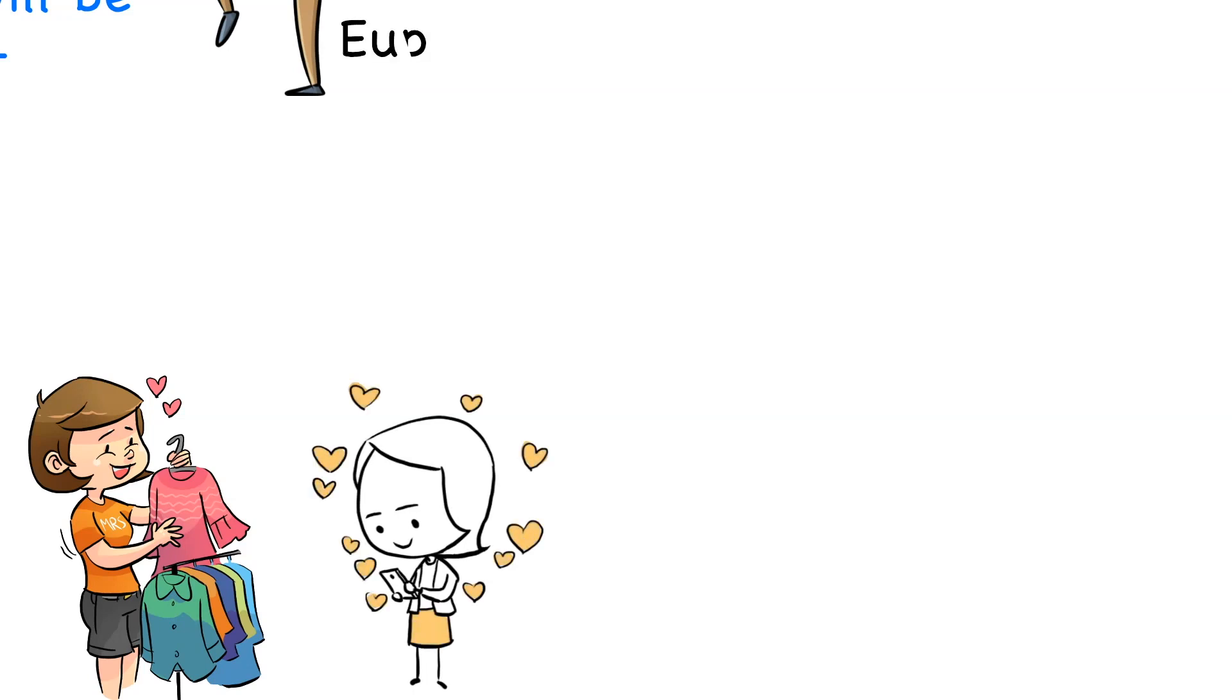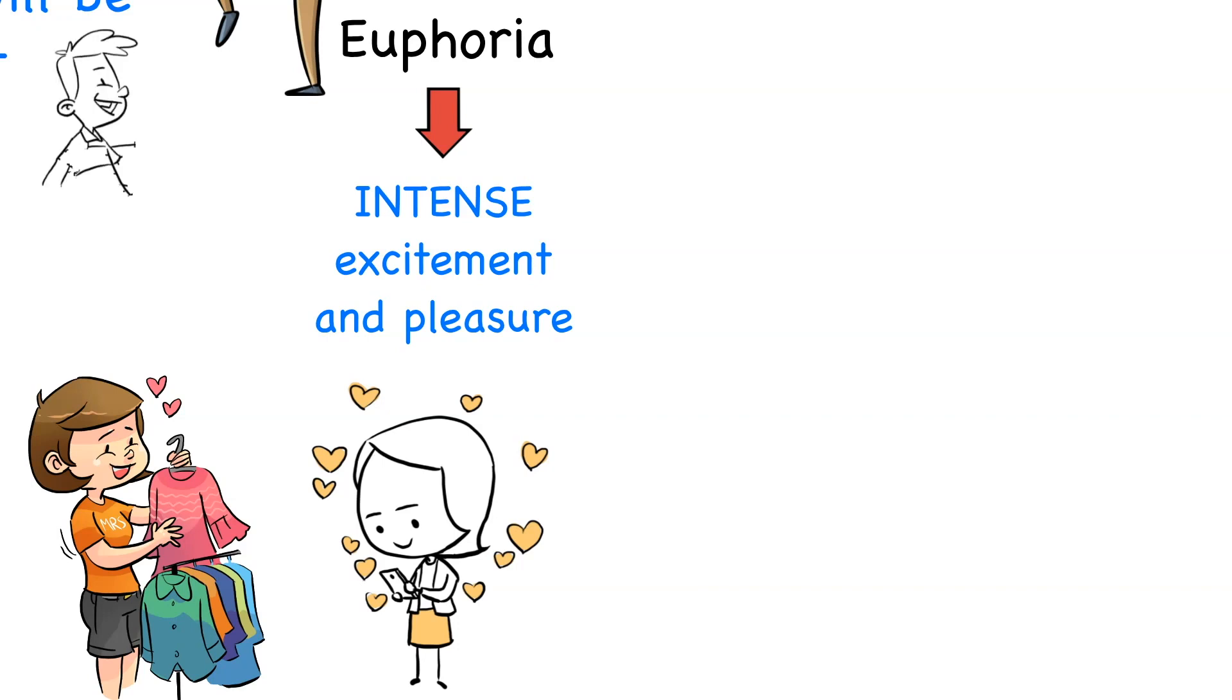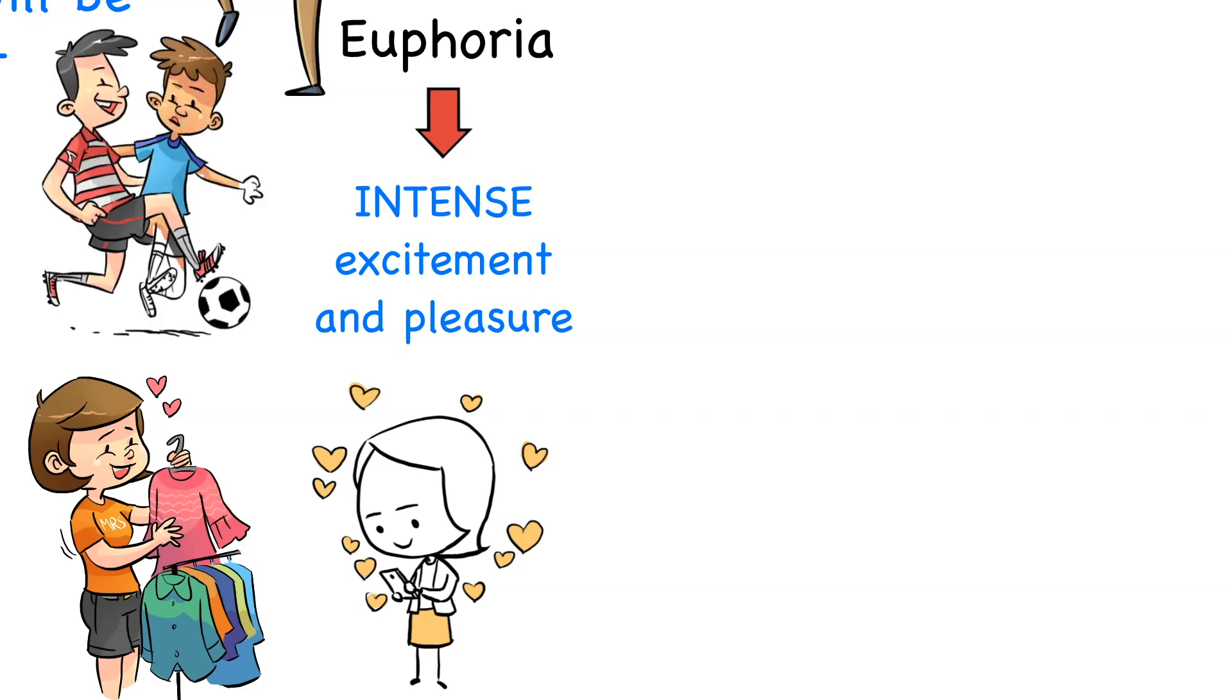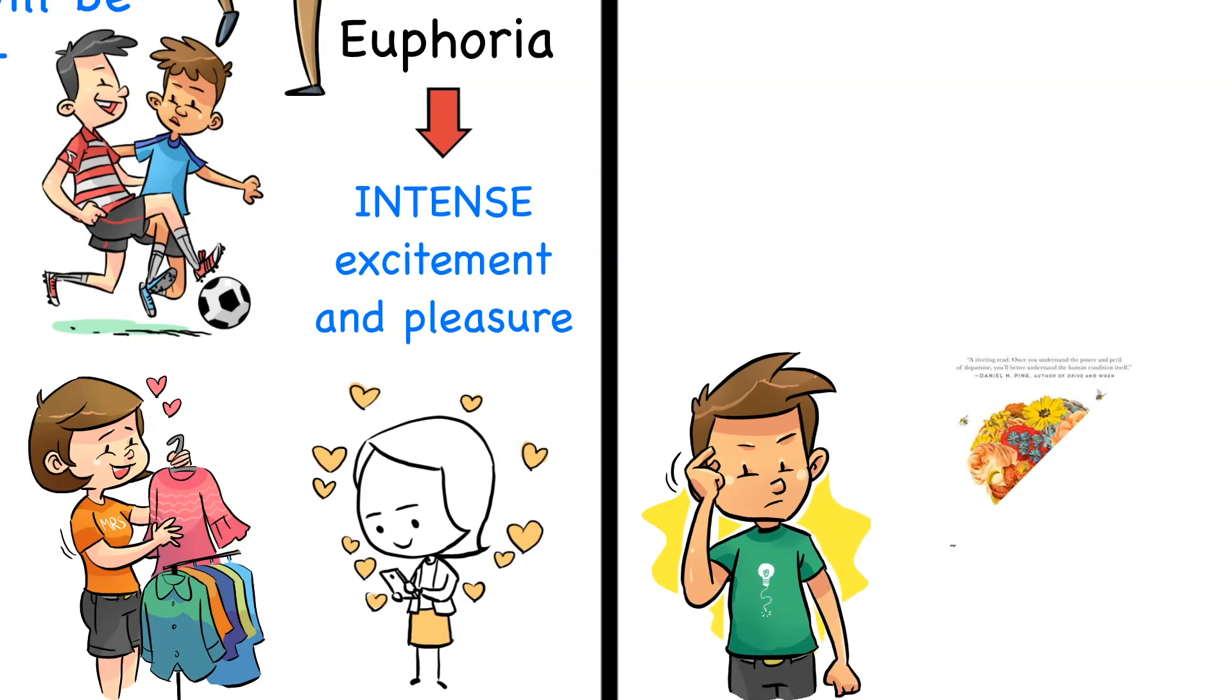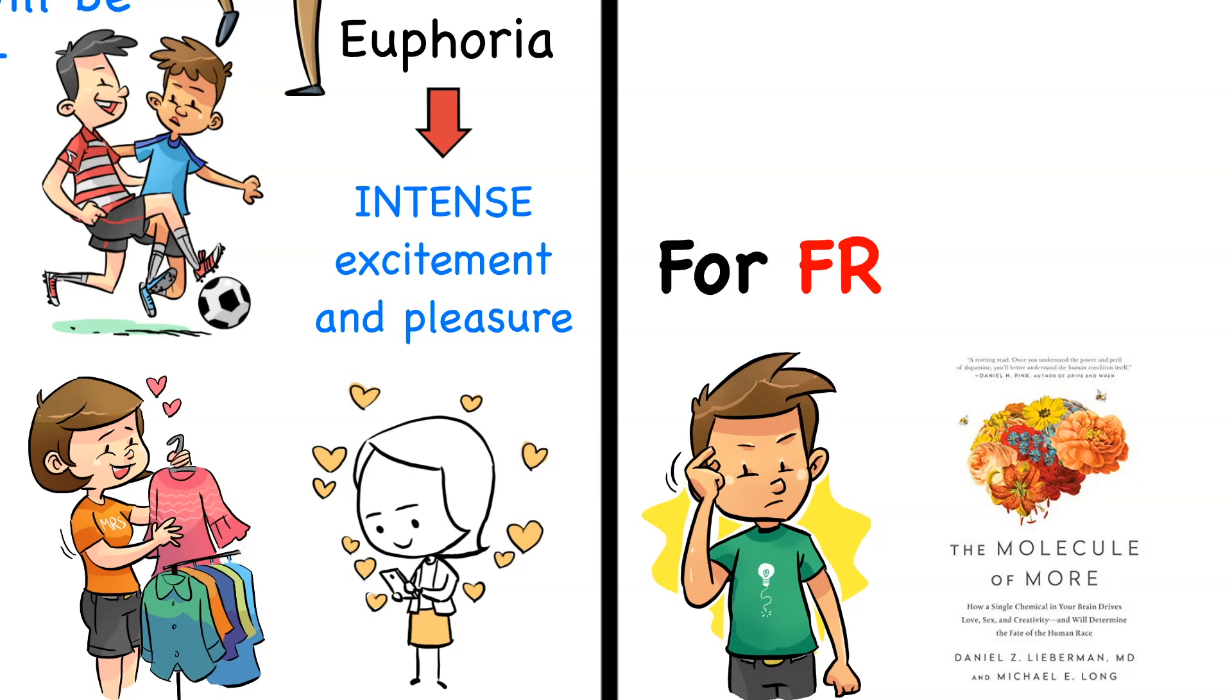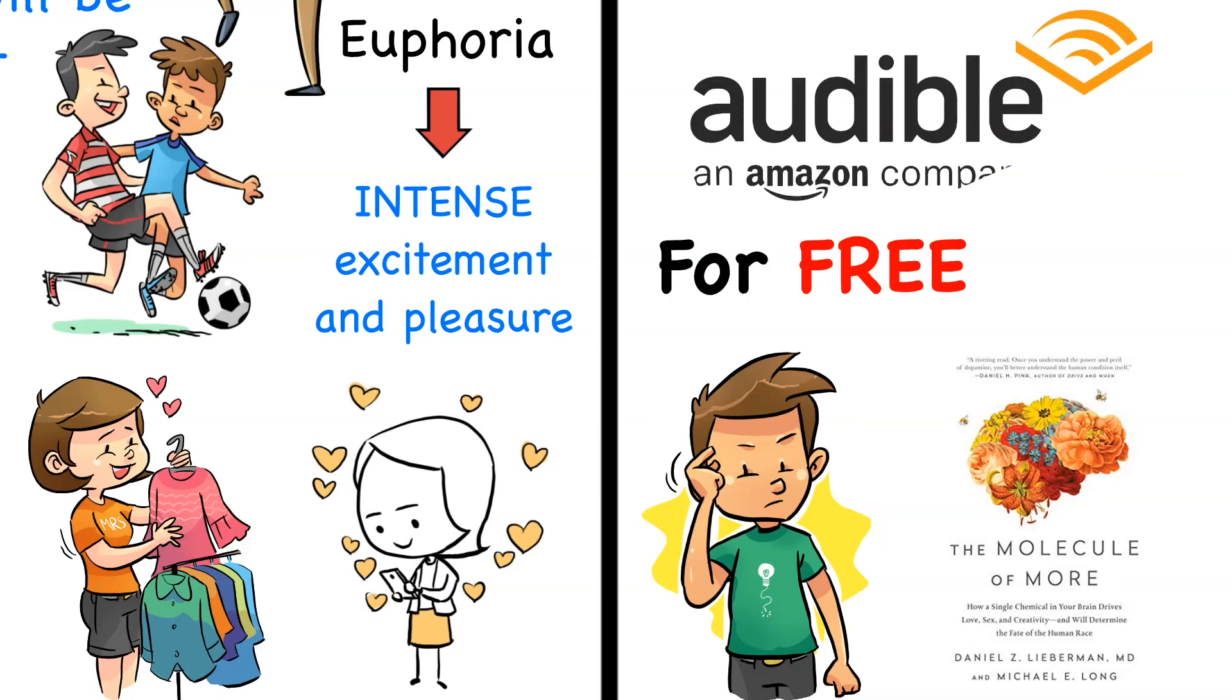Dopamine is related to feelings of euphoria. Any state of intense excitement and pleasure is highly influenced by dopamine. For example, when you climax having sex or the pleasure you feel when you score the last minute goal. By the way, if you want to go into more depth about how dopamine works and how to use it to your advantage, make sure to grab the audiobook of Dopamine, the Molecule of More by Dr. Daniel Liverman. You can get it for free by signing up to audible.com free trial with the link in the description of this video.